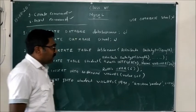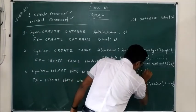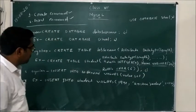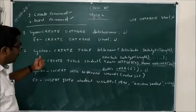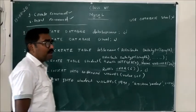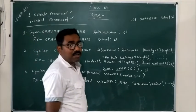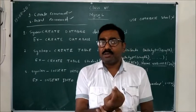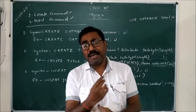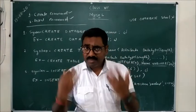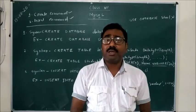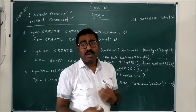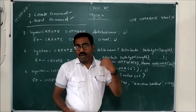After defining all attributes, put a semicolon and press Enter. The table will be created and a message like 'one row created' or 'one table created' will appear, followed by the MySQL prompt again.